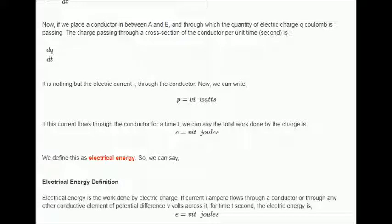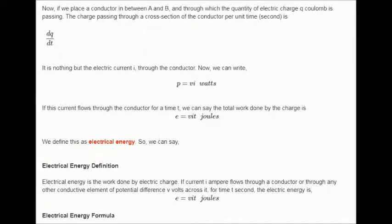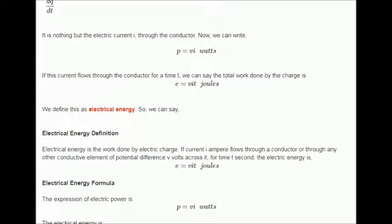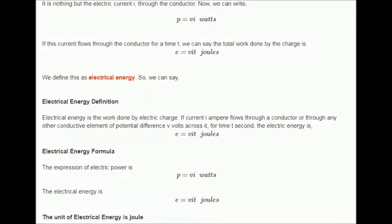If current I ampere flows through a conductor or through any other conductive element of potential difference V volts across it, for time T second, the electric energy is as follows. Electrical energy formula: The expression of electric power is as follows. Hence, the electrical energy is able to express as follows.